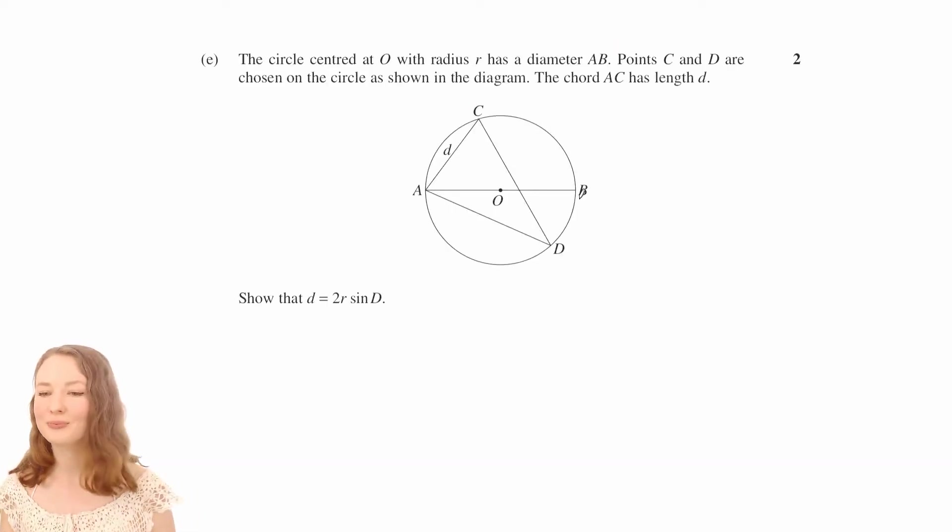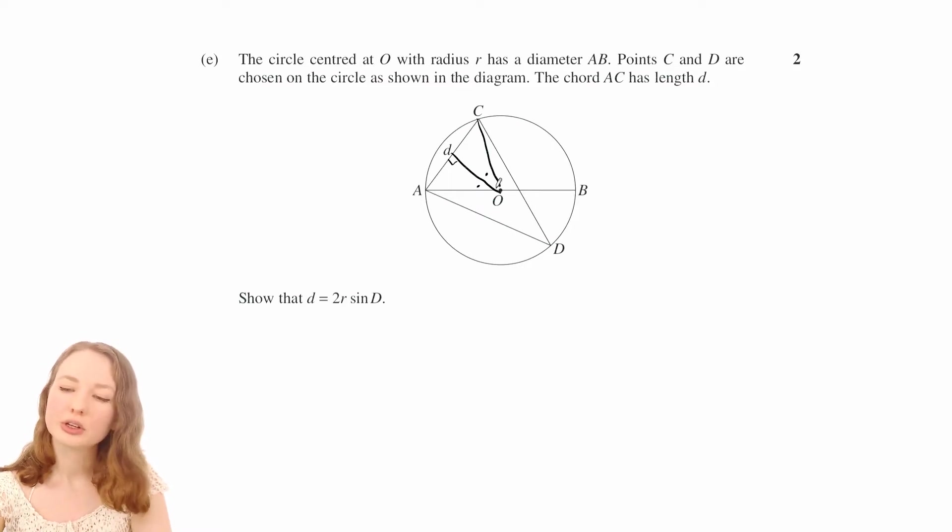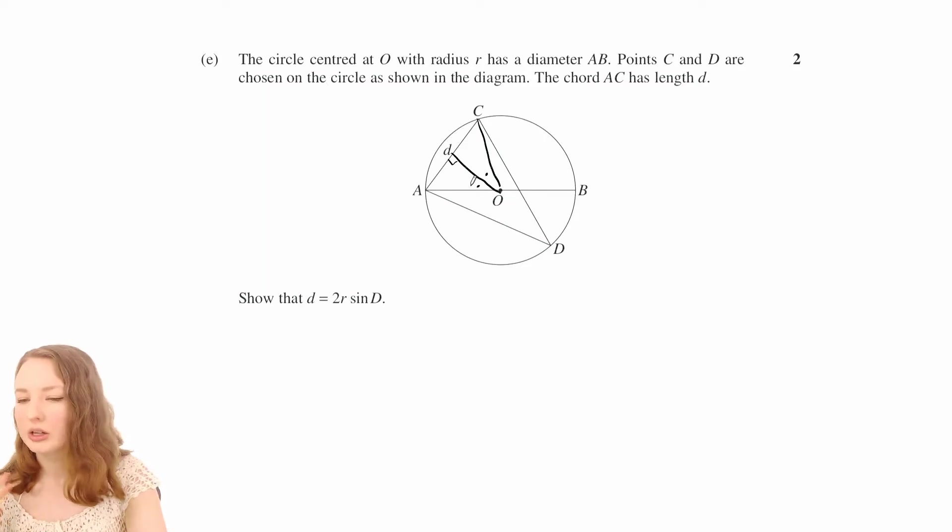Part E. Now, my first instinct with this one was to consider the angle at O, that's going to be twice the angle at the circumference, so that's 2 times d. And then you could cut up that triangle and then those two angles would be the same, so each one would be d. And then you could look at that triangle and do sine of that. But then I realized, I don't think we're allowed to just assume that drawing that line in will bisect.